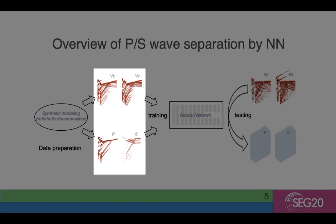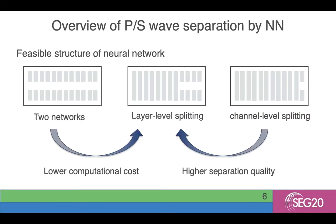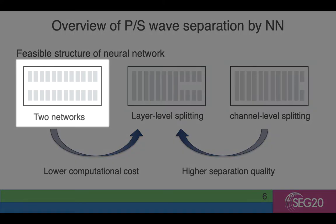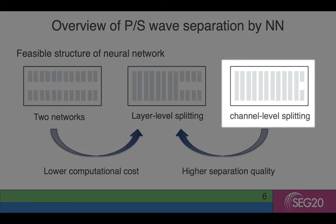How is our network designed? This network is a multi-input and multi-output task. In this 2D case, we have two inputs and two outputs. There are many neural network structures that can realize this multi-in, multi-out function. Most simply, you can use two networks, each one in charge of separating one mode. And most straightforwardly, if you are already a network user, you can just put the two outputs in different channels. However, we found that when the difference between the two outputs is large, only putting them on different channels is not good enough to separate them well.